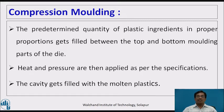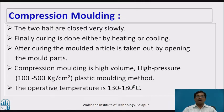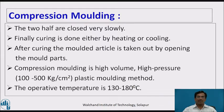A predetermined quantity of plastic ingredients in proper proportion gets filled between the top and bottom molding parts of the die. Heat and pressure are then applied as per the specifications. The cavity gets filled with molten plastics and the two halves are closed very slowly. Curing is done either by heating or cooling process. After curing, the molded article is taken out by opening the mold parts. Very high pressure — almost 100 to 1500 kg per cm² — is applied, and the plastic mold is formed under these conditions.